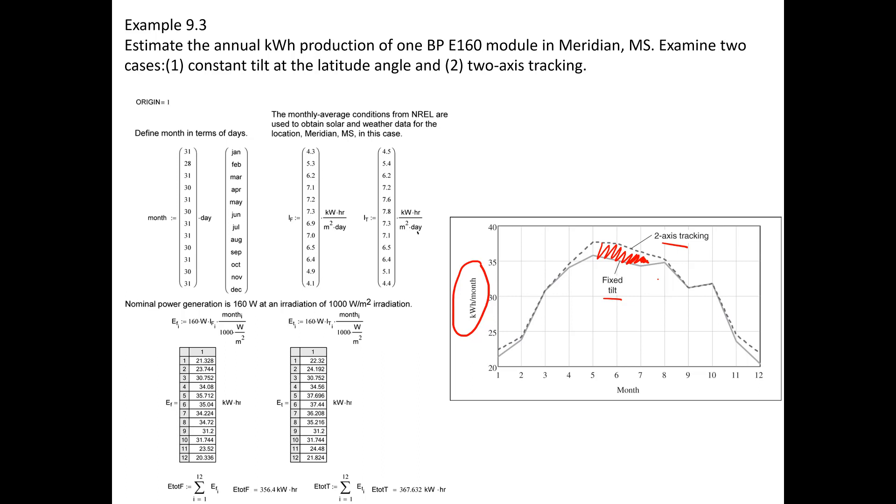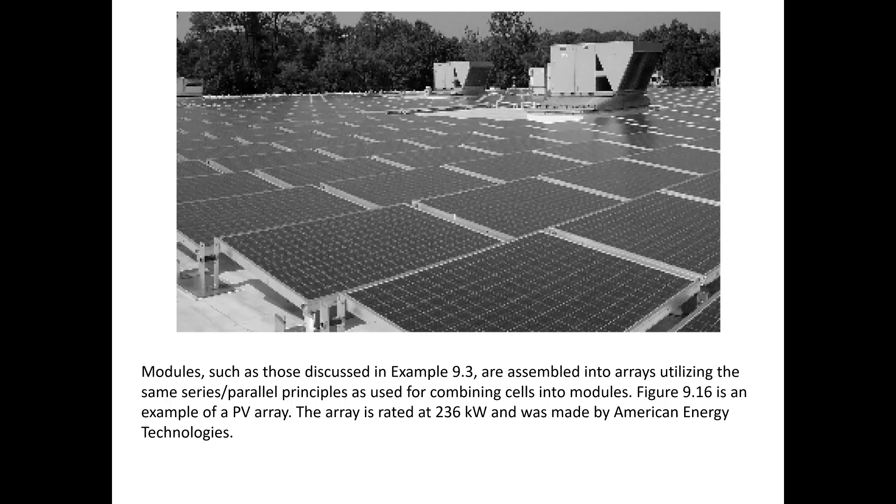So modules, such as illustrated in the example problem, are assembled into arrays utilizing the same series parallel principles as used for combining cells into modules. The figure here is an example of a photovoltaic array, and this particular array is rated at 236 kilowatts, and was made by a company called American Energy Technologies.